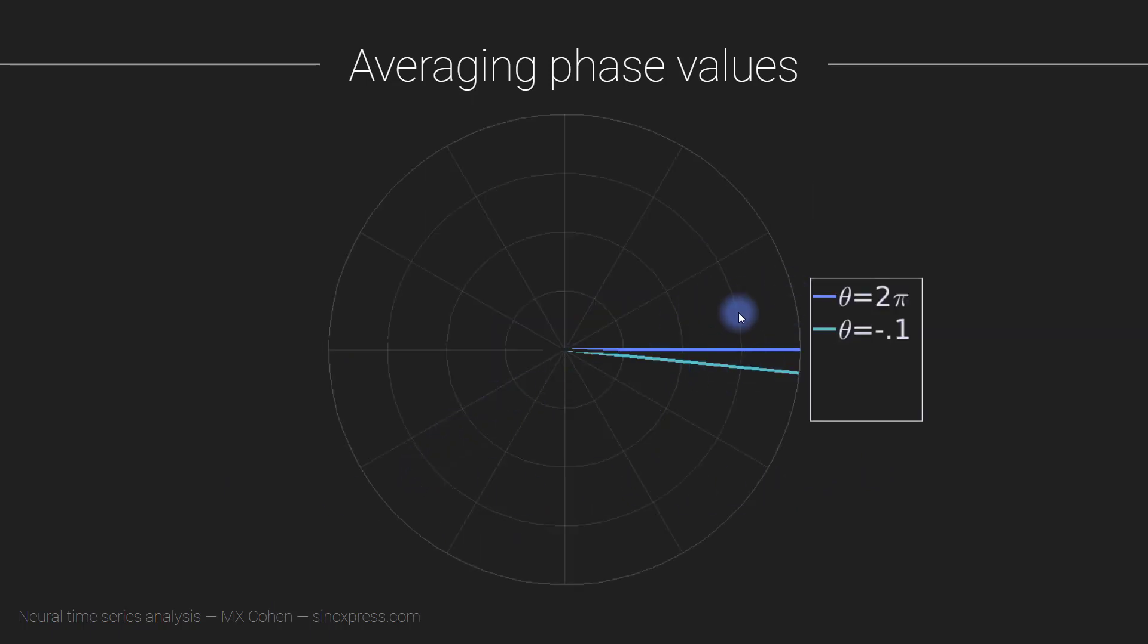This was the example you saw previously. If we have these two vectors here with angles defined by 2π and minus 0.1 radians, then the average of these two numbers, if you consider these to be regular numbers, the average is around π. However, that average vector, a vector defined by the average of these two angles as if they were numbers, would be a vector pointing out this way, which is not the average of these two vectors.